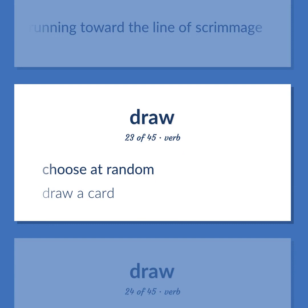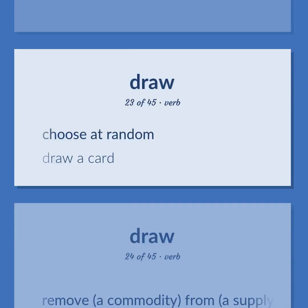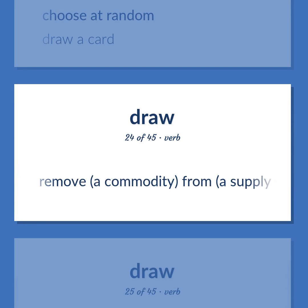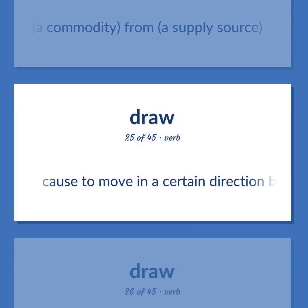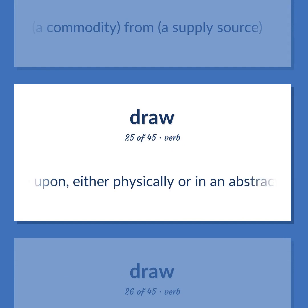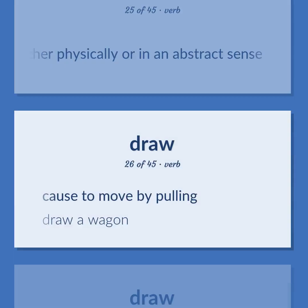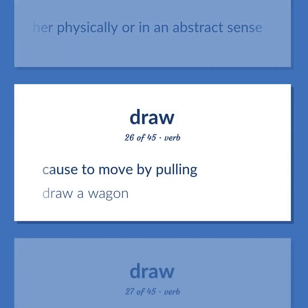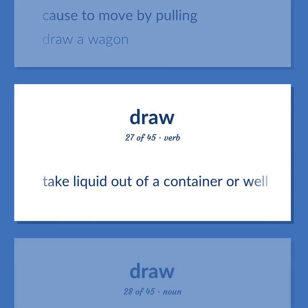Choose at random. Draw a card. Remove a commodity from a supply source. Choose to move in a certain direction by exerting a force upon, either physically or in an abstract sense. Choose to move by pulling. Draw a wagon. Take liquid out of a container or well.